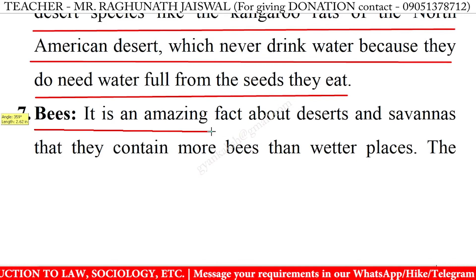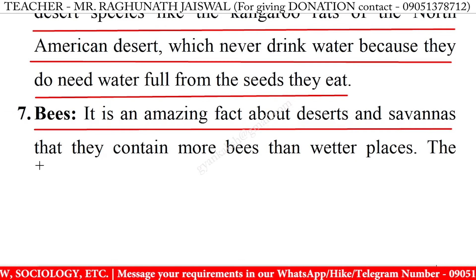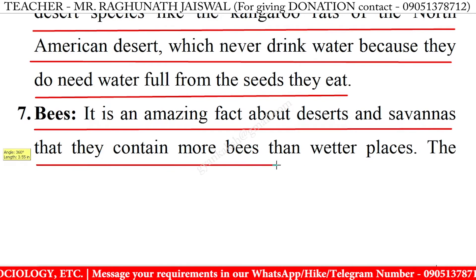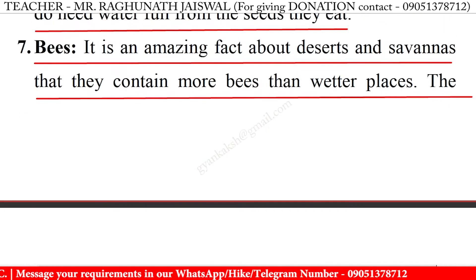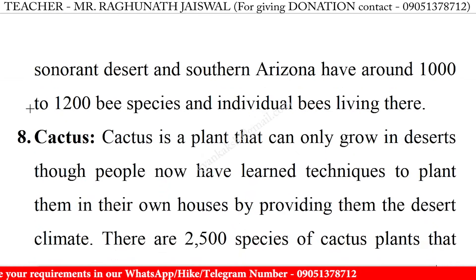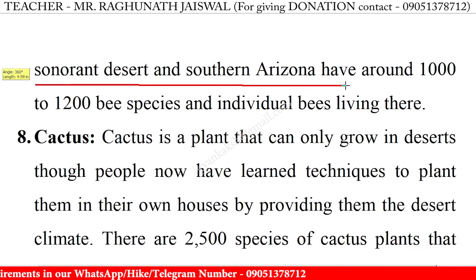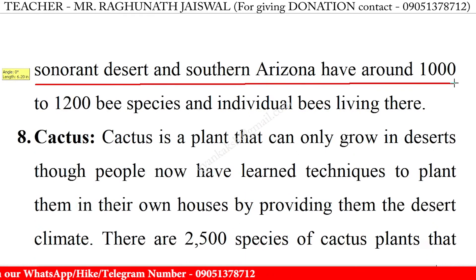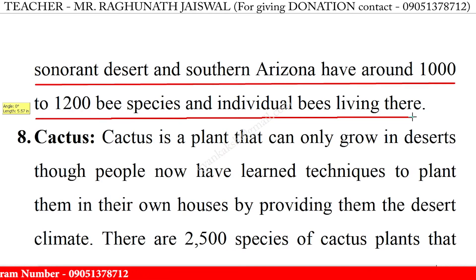7. Bees: It is an amazing fact about deserts and savannahs that they contain more bees than wetter places. The Sonoran Desert and southern Arizona have around 1,000 to 1,200 bee species and individual bees living there.